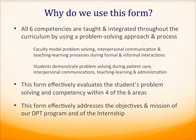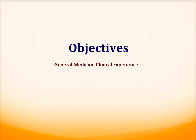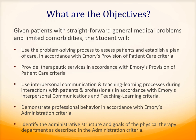What are our objectives for the general medicine internship experience? We have five objectives. Given patients with straightforward general medical problems and limited comorbidities, the student will: first, use the problem-solving process to assess patients and establish a plan of care in accordance with Emory's provision of patient care criteria; second, provide therapeutic services in accordance with Emory's provision of patient care criteria; third, use interpersonal communication and teaching learning process during interactions with patients and professionals; fourth, demonstrate professional behavior in accordance with Emory's administration criteria; and lastly, identify the administrative structure and goals of the physical therapy department.